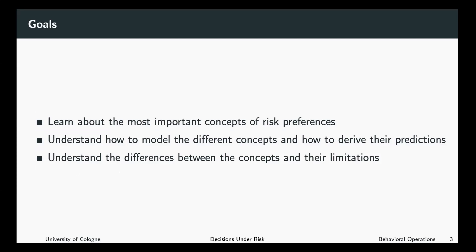The goals of this part of the lecture are to learn about the most important concepts of risk preferences, understand how to model these concepts, and derive their predictions. We will have analytical models and apply them. We also aim to understand the differences between the different concepts and their limitations — for example, the differences between risk aversion and loss aversion.